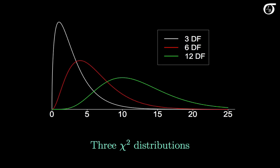Here I've plotted 3 chi-square distributions. The white curve is a chi-square distribution with 3 degrees of freedom, the red curve a chi-square distribution with 6 degrees of freedom, and the green curve a chi-square distribution with 12 degrees of freedom. When the degrees of freedom are 3 or more, the PDF starts at 0, increases to a max, and then decreases. We can see that there is strong right skewness when the degrees of freedom are small, like in the white curve, but as the degrees of freedom increase, the skewness decreases and the distribution gets more and more symmetric.